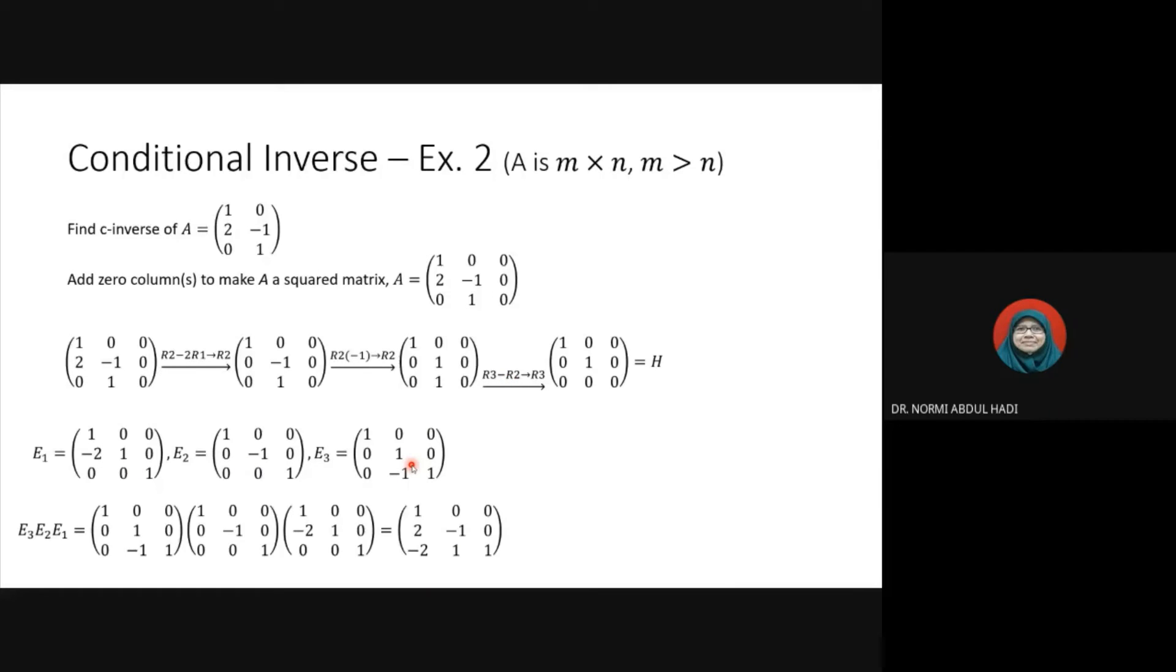B is E3·E2·E1. Since A is 3 by 2, AC is 2 by 3. This is the conditional inverse of A.